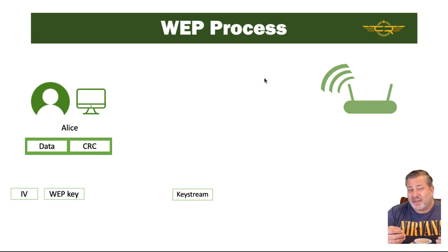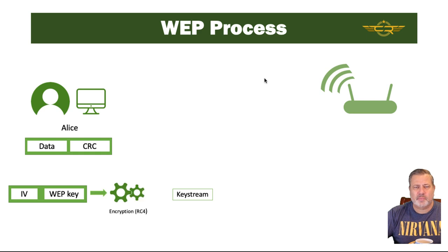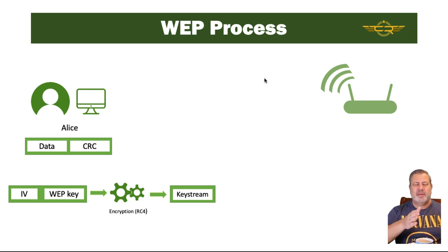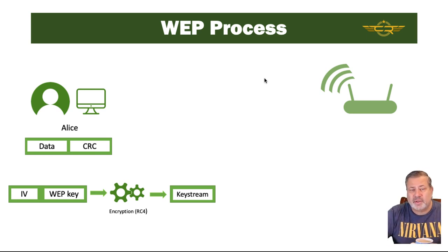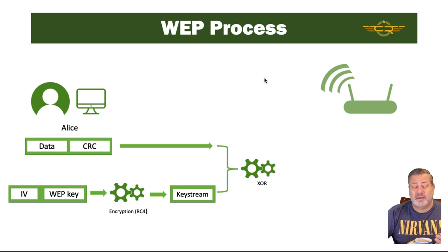The IV and the WEP key are combined — 'munged' together — and run through the RC4 encryption algorithm, resulting in a key stream. Then in a process called XORing, the data and the key stream are combined, resulting in an encrypted transmission going across the wireless network as ciphertext.